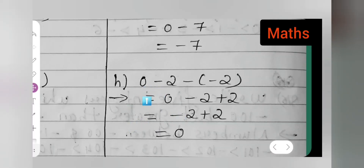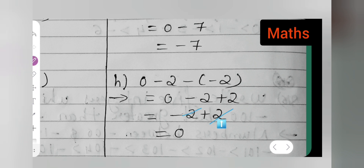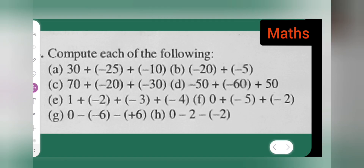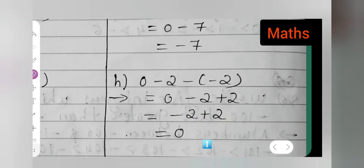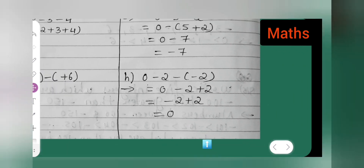Part (h): 0 minus 2 minus (minus 2). Put 0 as it is, minus 2 as it is, and minus into minus gives plus 2. So it is minus 2 plus 2, which cancels out to give 0. That is the last part. They asked a total of h problems and I have solved all of them. I hope you all understood today's class. Thanks for watching.